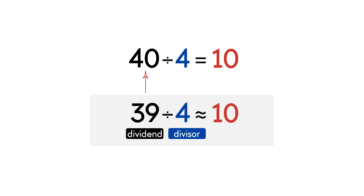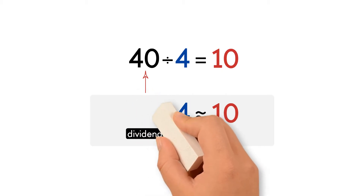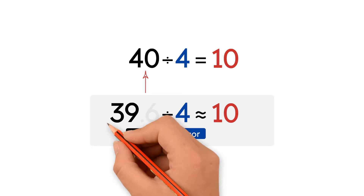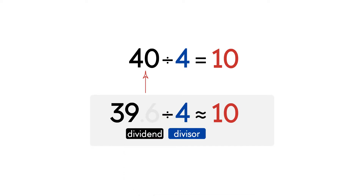This sign means approximately. Let's go back to decimals. Imagine that we have 39.6 instead of 39 — the steps will be the same. When choosing compatible numbers, we need to look at the whole number part of the decimal dividend.